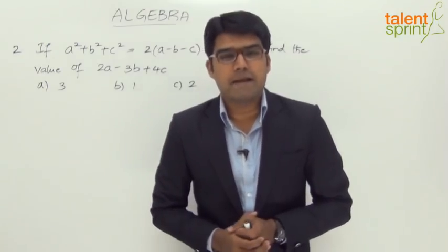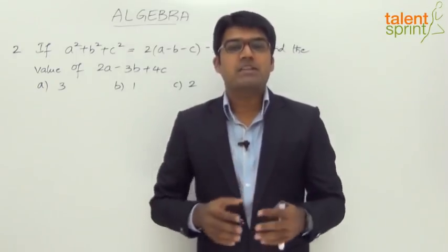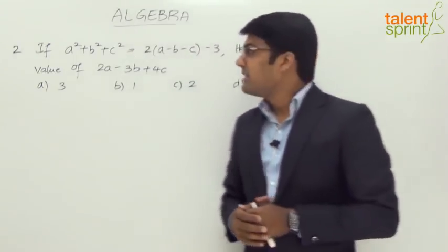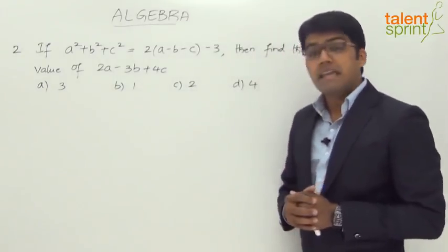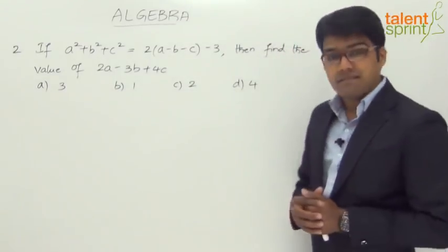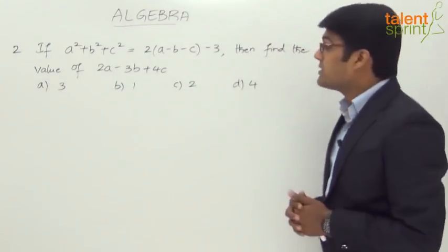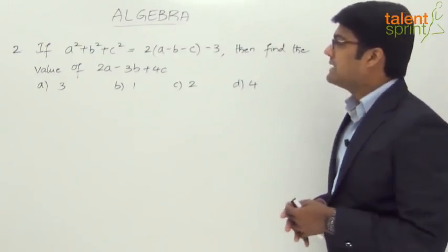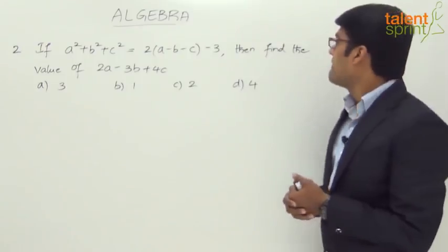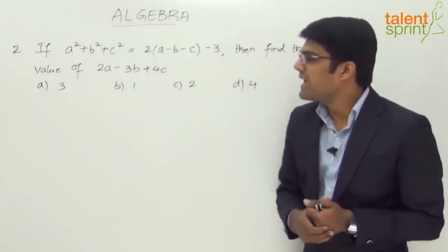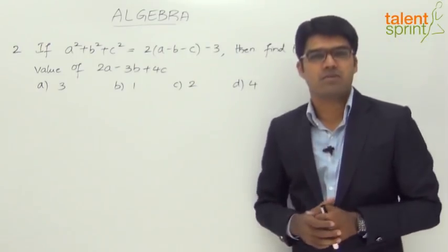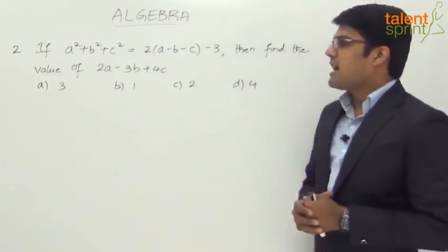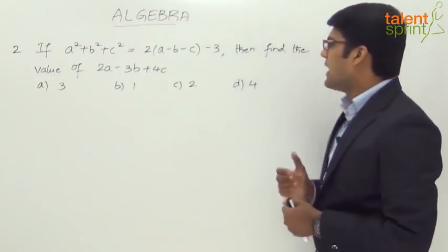Let us now take the second example — this is a previously asked SSC CGL exam question. It goes as follows: if a² + b² + c² = 2(a - b - c) - 3, then find the value of 2a - 3b + 4c. The options are 3, 1, 2, and 4.